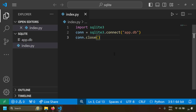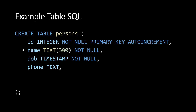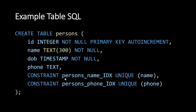Now let's try to create a table in this SQLite database so we can do operations like adding rows and deleting rows. We'll execute an SQL command to create a table called Persons. The SQL syntax is CREATE TABLE Persons with columns defined in brackets. The ID column is an integer, it's a primary key, and it auto-increments. There's a name column which is text with a 300-character limit and NOT NULL. There's a DOB (date of birth) column which is a timestamp and NOT NULL. And there's a phone column which is a text column. You can also provide constraints — I've given a unique constraint on name and phone, meaning you can't have two rows with the same name or same phone number.